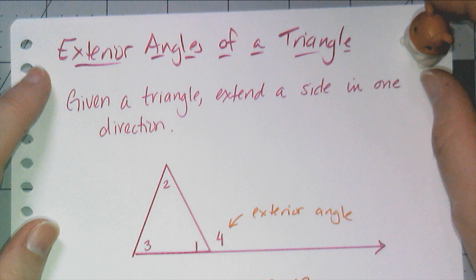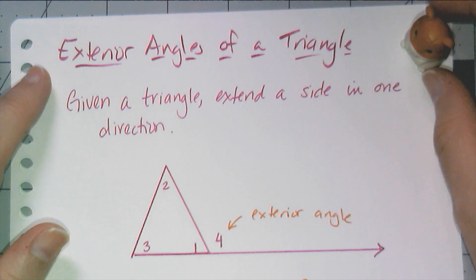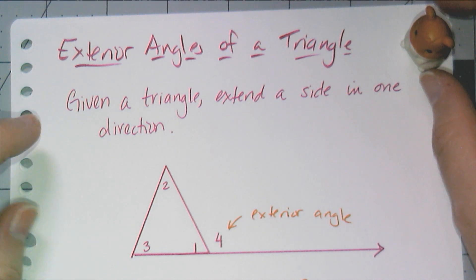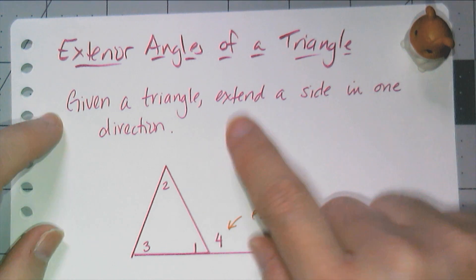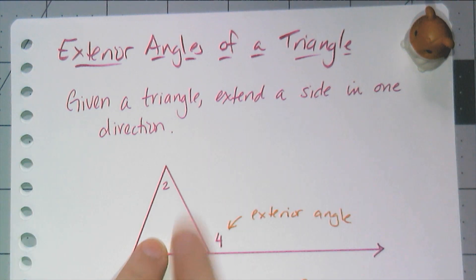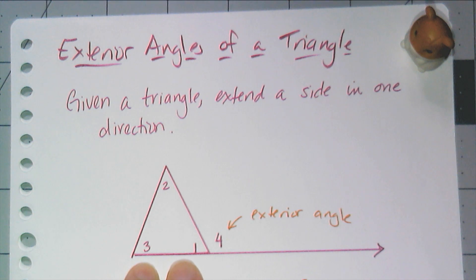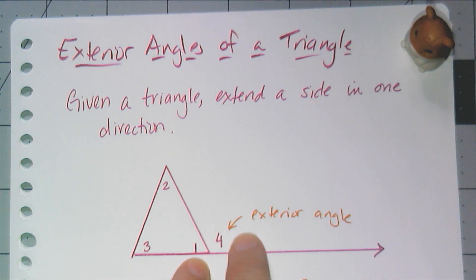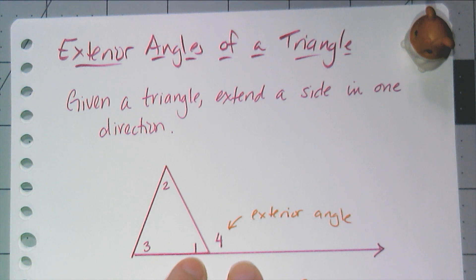Let's talk about exterior angles of triangles. If I'm given a triangle and I extend one side of the triangle in one direction, I create this angle, which is called an exterior angle. It is outside of the triangle.